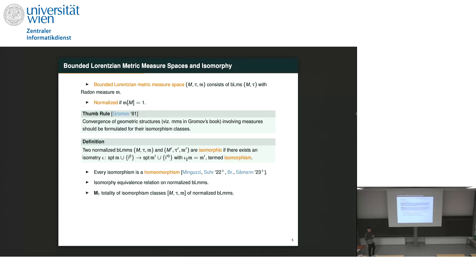It turns out, as an outcome of the detailed work of Minguzzi and Suhr, that every isomorphism defined in this way is actually a homeomorphism — it gives topological information. Our contribution was to deduce the surjectivity from the measure-preserving property, which is not totally trivial because the time separation function is not a distance, but it works given the compactness properties of the space. As a consequence, isomorphy yields an equivalence relation on the class of normalized bounded Lorentzian metric measure spaces. I denote by bold M₁ the totality of isomorphism classes, and isomorphism classes by square brackets.